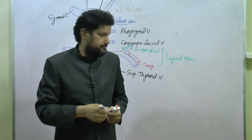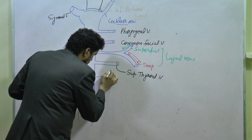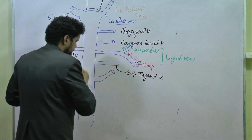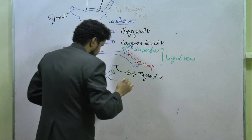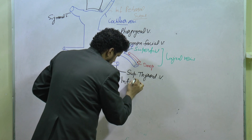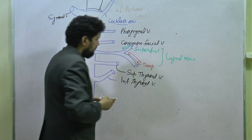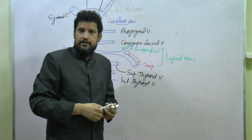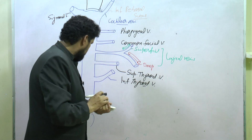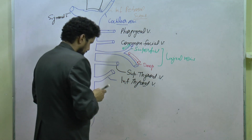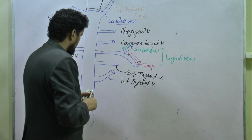The next tributary is the inferior thyroid vein. This is the first vessel encountered during surgery on the thyroid gland, so it must be carefully ligated and protected from any damage.